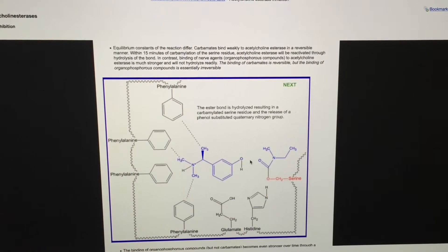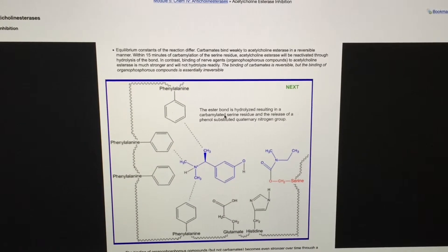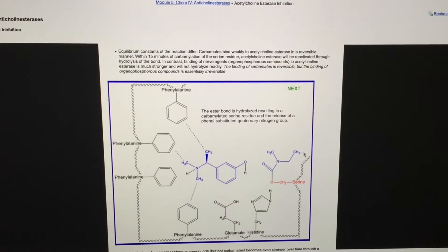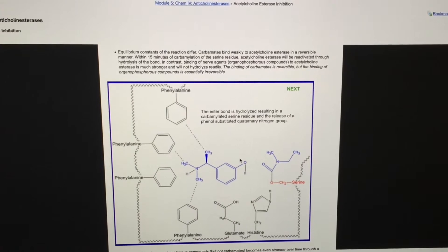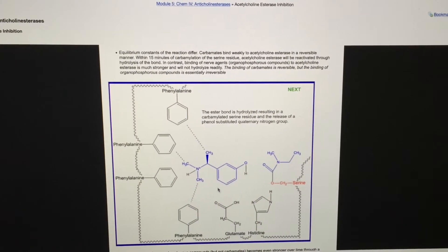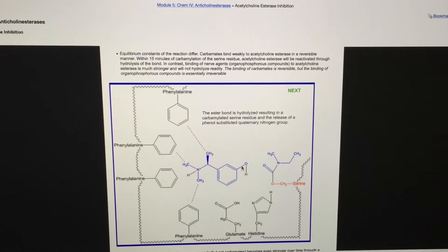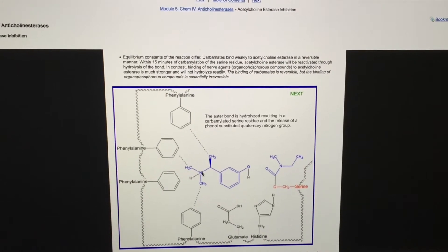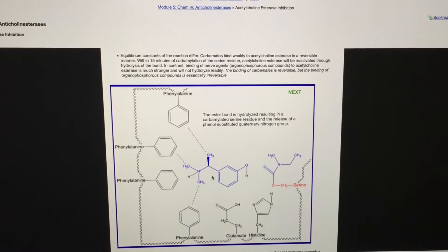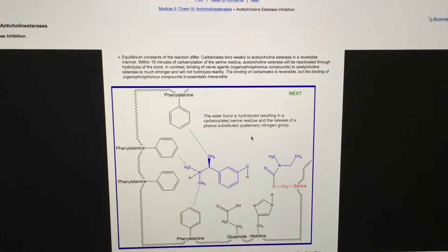Hydrolysis reaction of the ester group, that is where the carbon is double bonded to the oxygen, results in a carbamylated serine residue. That is, the carbamate group is attached to the serine via a covalent bond of oxygen and carbon.